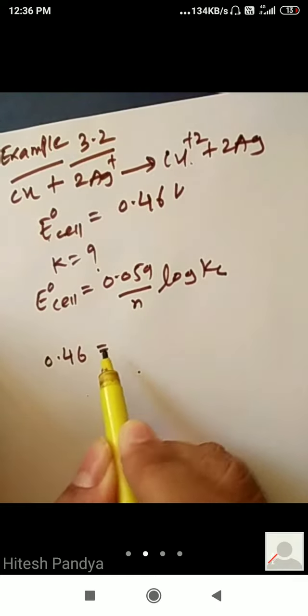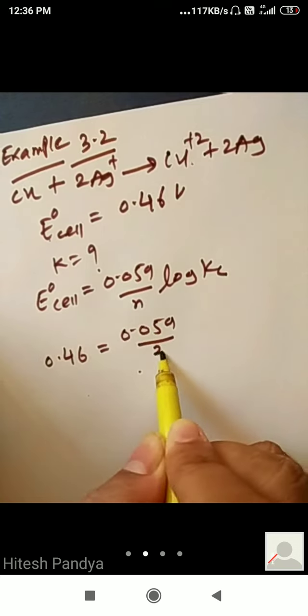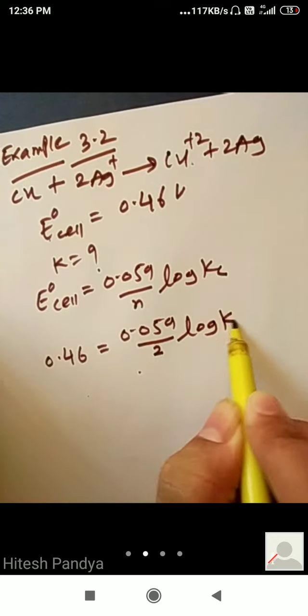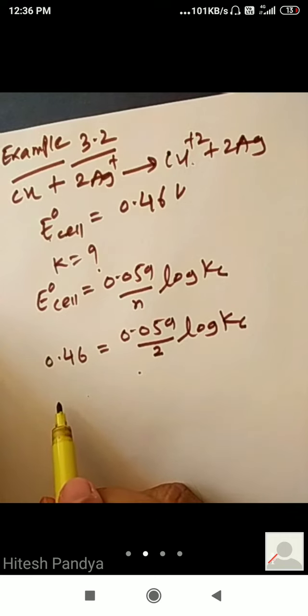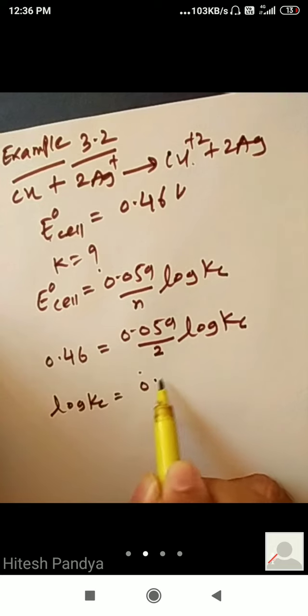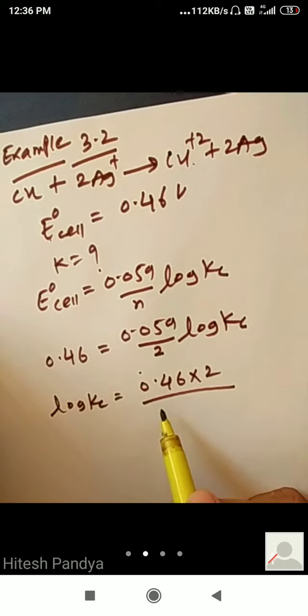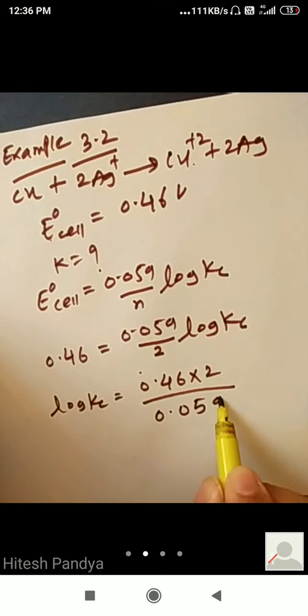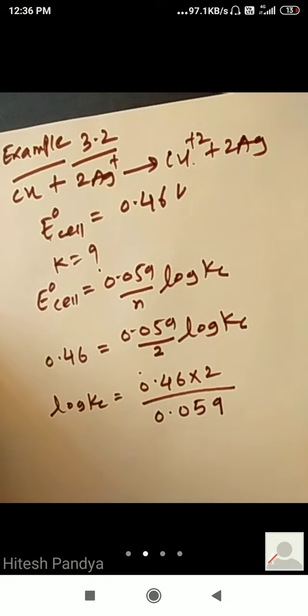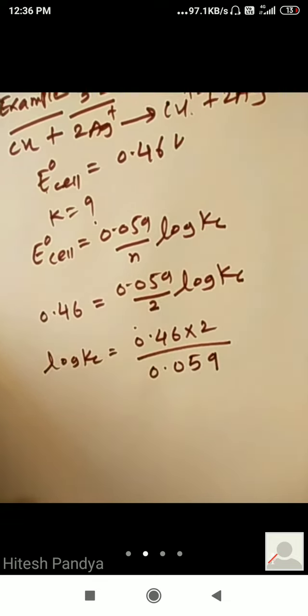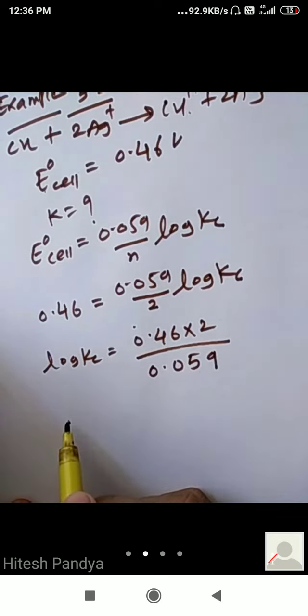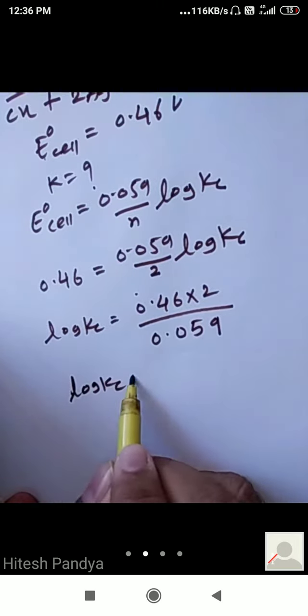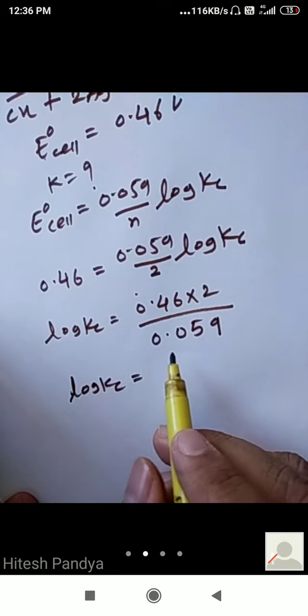E not cell 0.46 is equal to 0.059 divided by 2 log Kc. Log Kc calculate karna hai. Log Kc is equal to 0.46 into 2 divided by 0.059. Log Kc is equal to 15.6.